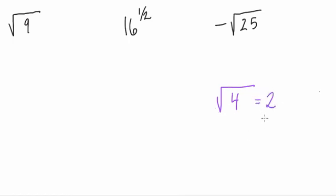2 is called the principal root because it's the positive root. Typically, that's only what we look for. However, it could also be negative 2, right? Because 2 times 2 is 4, but so is negative 2 times negative 2. It's also 4. So essentially, these are both roots for the square root of 4.